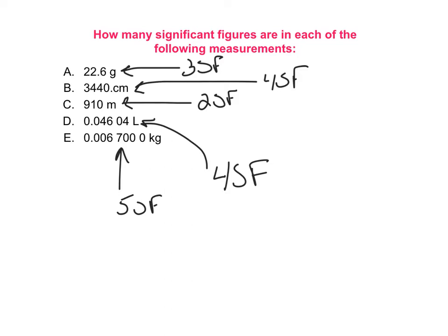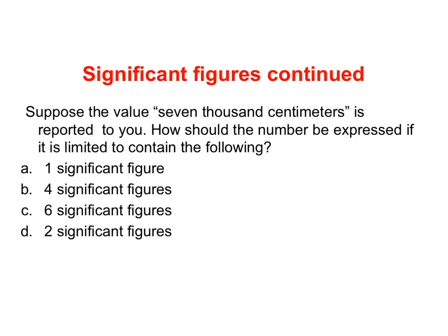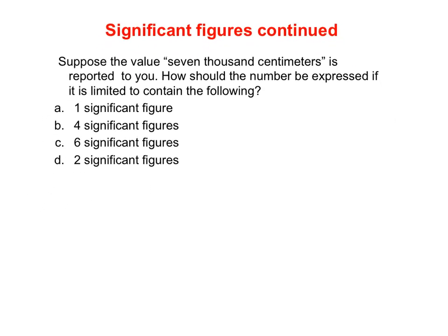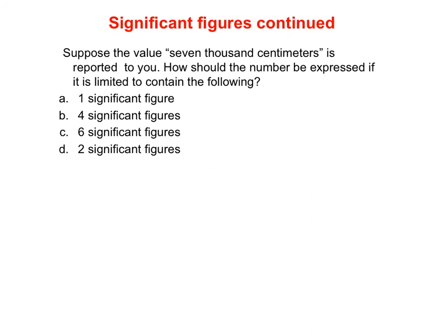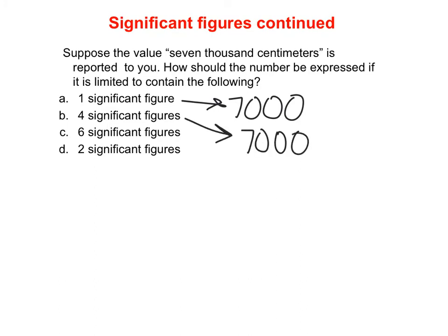Now let's try math with significant figures. Before we get into the math, we need to understand how to write a number with a specific number of significant figures. For example, 7,000 only has one significant figure. To write it with four significant figures, you can make all those zeros significant by adding a decimal point. To write it with six significant figures, tack on two more zeros after the decimal point.